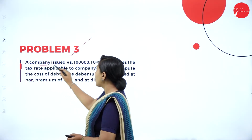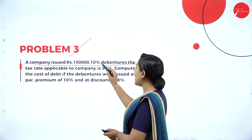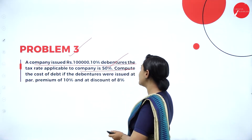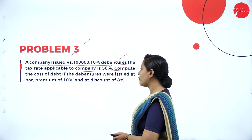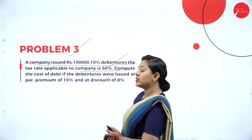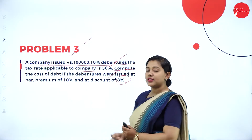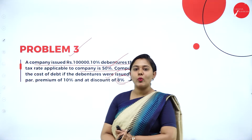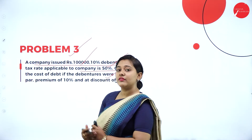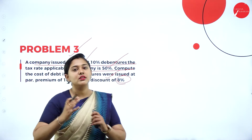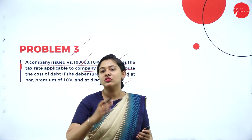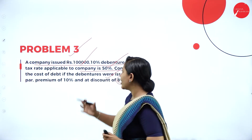Problem number 3: A company issues 1 lakh rupees of 10% debentures. The tax rate applicable to the company is 50%. Compute the cost of debt if the debentures were issued at par, at a premium of 10%, and at a discount of 8%. That is the information given in the question.